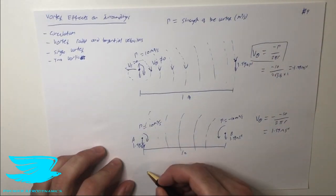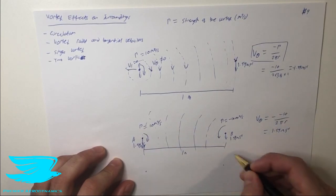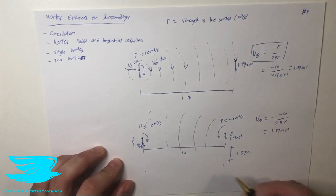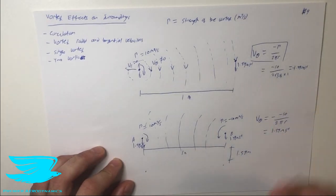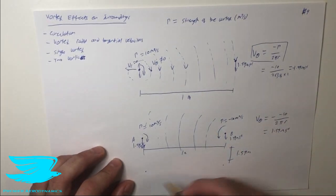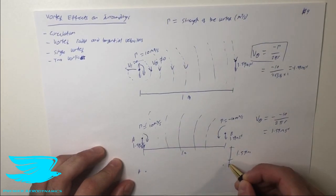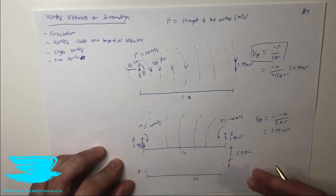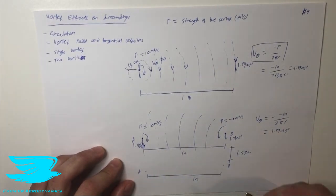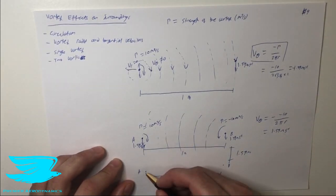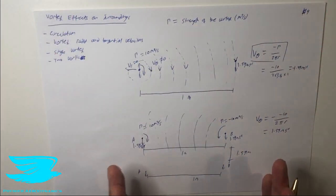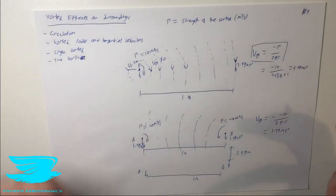What does this mean over time? In one second, both vortices move down by 1.59 meters, which means they stay exactly the same distance from each other and in the same relative position. At one second later, they are both 1.59 meters further down, still horizontally in line, and will continue moving each other downward at the same velocity — translating together.